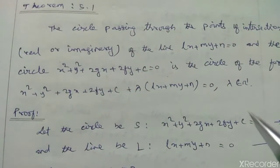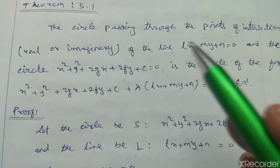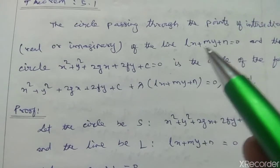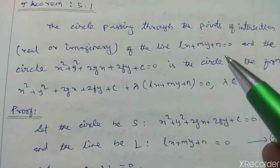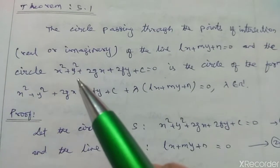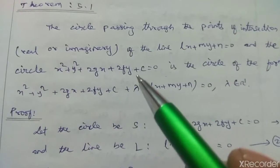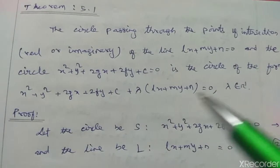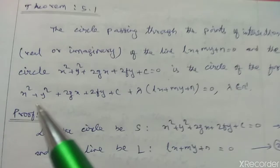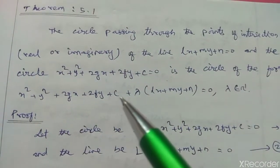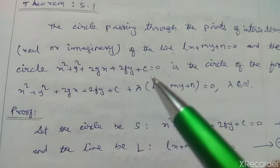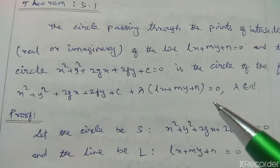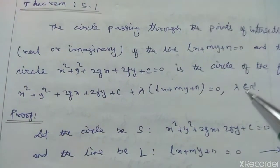Theorem 5.1. The circle passing through the points of intersection of the line Lx + My + N = 0 and the circle x² + y² + 2gx + 2fy + C = 0 is the circle of the form x² + y² + 2gx + 2fy + C + λ(Lx + My + N) = 0, where λ belongs to R.